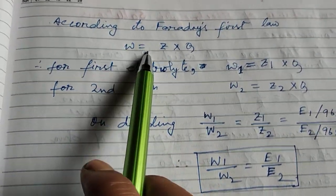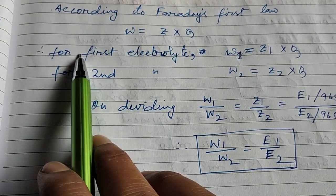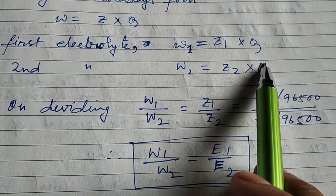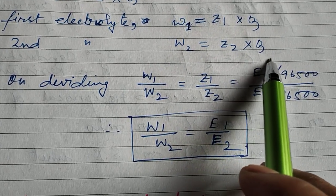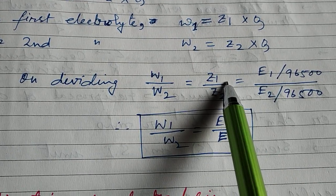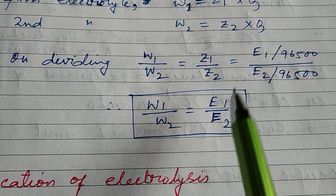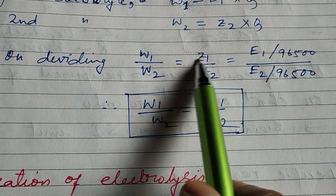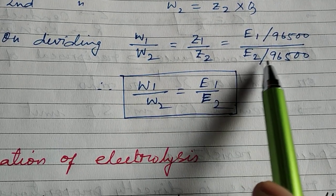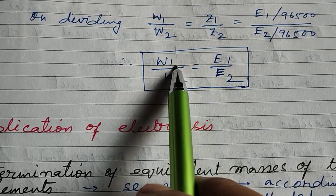From the first law, W = Z × Q. For the first electrolyte, W₁ = Z₁ × Q, and W₂ = Z₂ × Q. Dividing, W₁/W₂ = Z₁/Z₂. Since Z = E/96,500, we get Z₁/Z₂ = (E₁/96,500) / (E₂/96,500), which simplifies to W₁/W₂ = E₁/E₂.